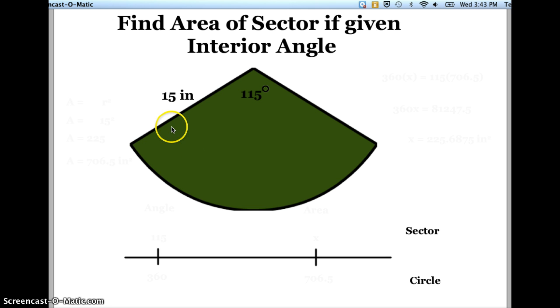Now since I know the radius of this sector is 15 inches, it's possible for me to find the area of the total circle. I also know that a circle has 360 degrees, and I know that this sector has an angle of 115 degrees.